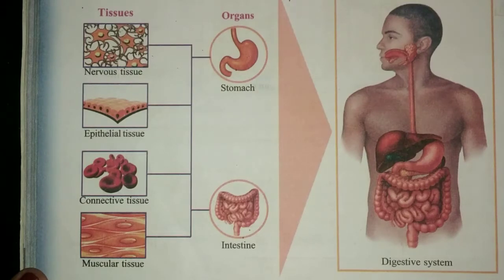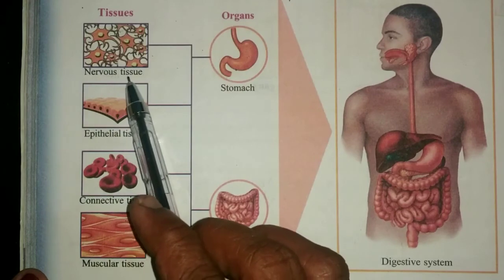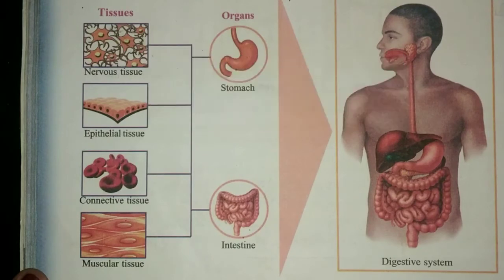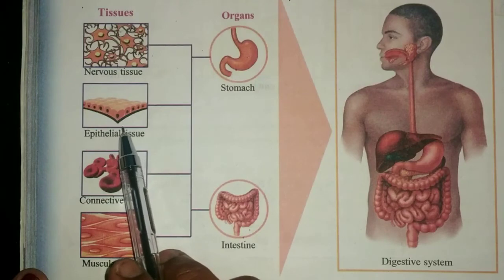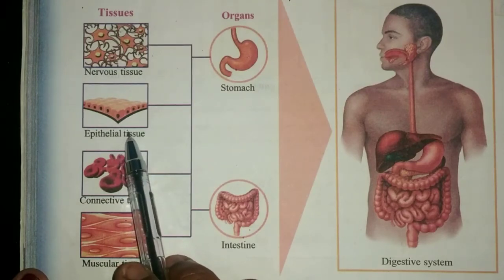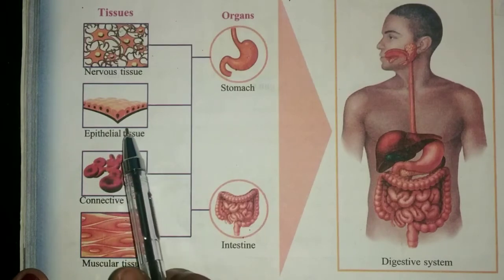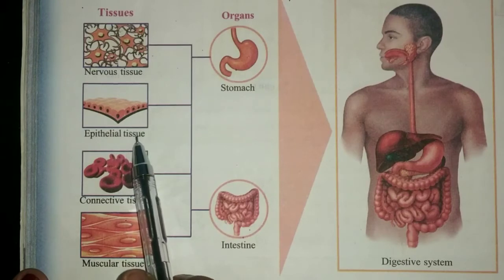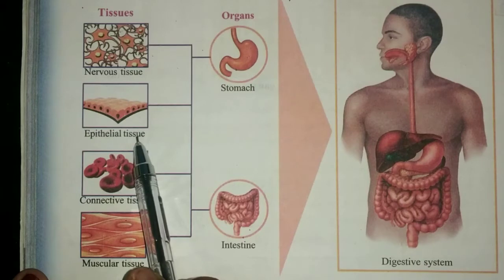What are the functions performed by each tissue in the illustration? The first one is nervous tissue. Nervous tissue helps to respond according to the changes that take place inside and outside the body. It helps to control and coordinate physiological activities. The second one is epithelial tissue. It covers and protects the body and internal organs. The internal organs are lined by epithelial tissue — for example, the inner linings of tubular parts inside our body.